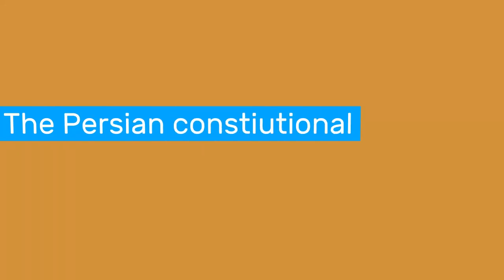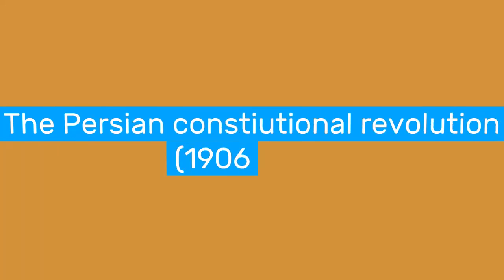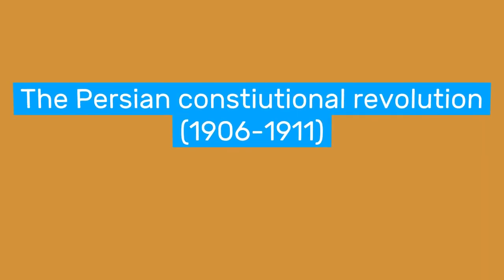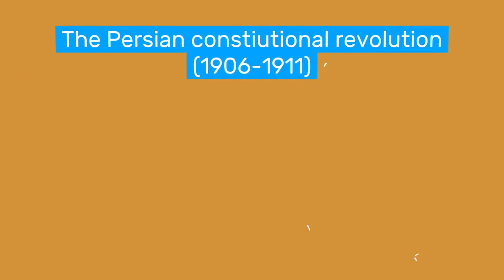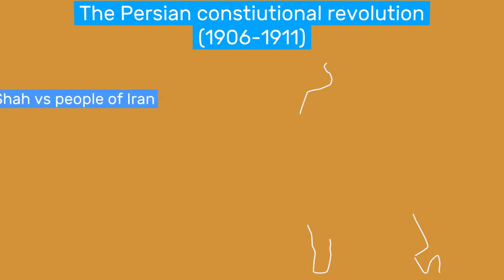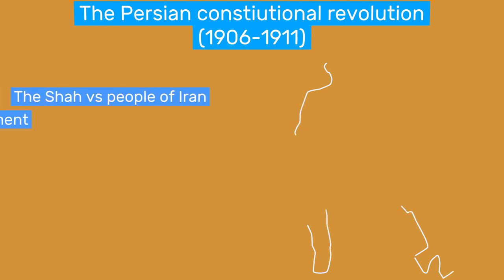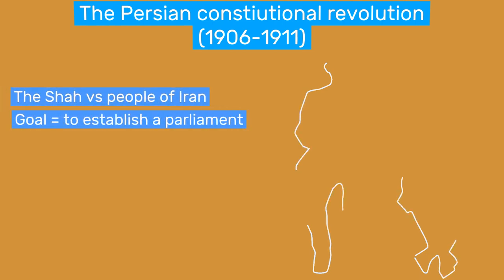The Persian Constitutional Revolution was a series of conflicts between 1906 and 1911 where the people of Iran fought with the Shah and his backers. The goal of revolutionaries was to abolish the despotic rule of the Shah and to establish a parliament.